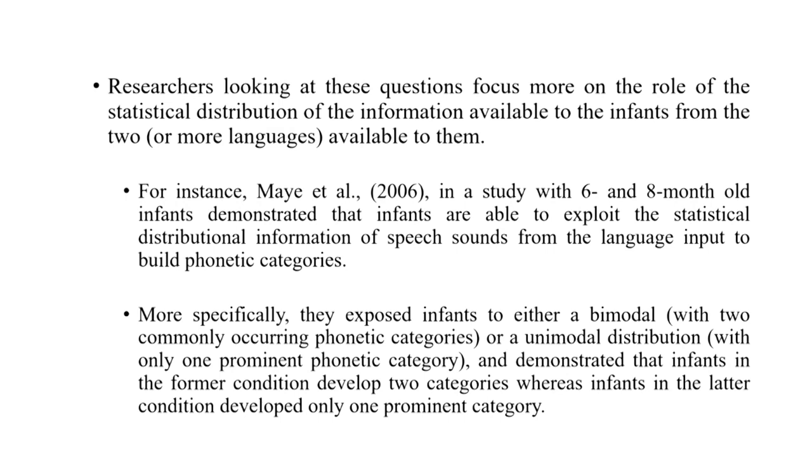Mai and colleagues in 2006, in a study with 6 and 8 month old infants, demonstrated that infants were able to exploit the statistical distribution of speech sounds from the language input to build different phonetic categories. More specifically, they exposed infants to either a bimodal distribution — wherein two types of phonetic categories were equally frequently presented — or a unimodal distributional system wherein only one type of phoneme category was presented repeatedly. They found that infants in the bimodal condition were able to develop two distinct phonetic categories, whereas infants in the unimodal condition developed only one prominent category.